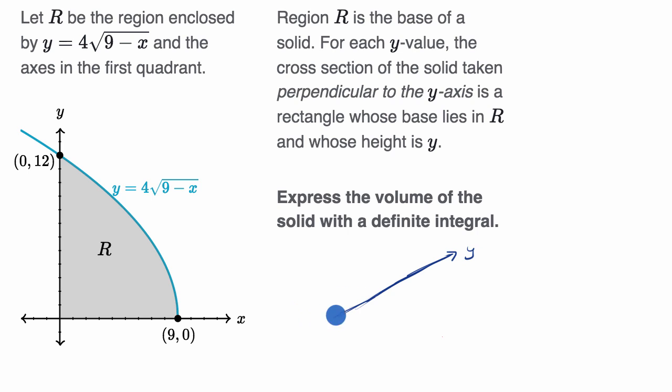So if that's our y-axis, and then this is our x-axis right over here, and I can redraw our region R. It looks something like this. And now let's just imagine a cross-section of our solid.